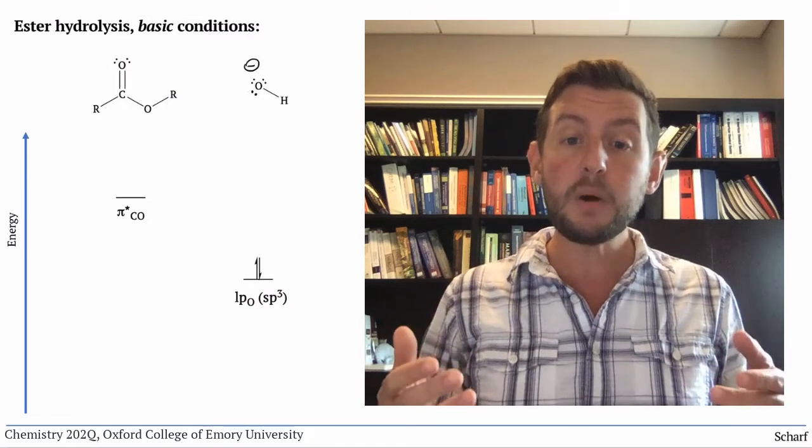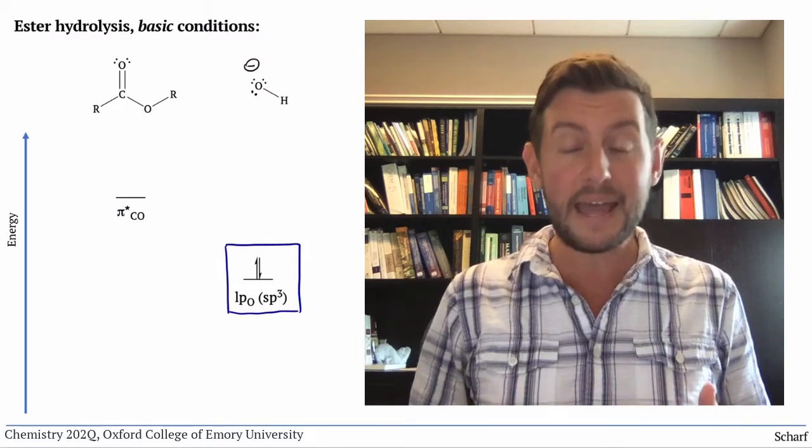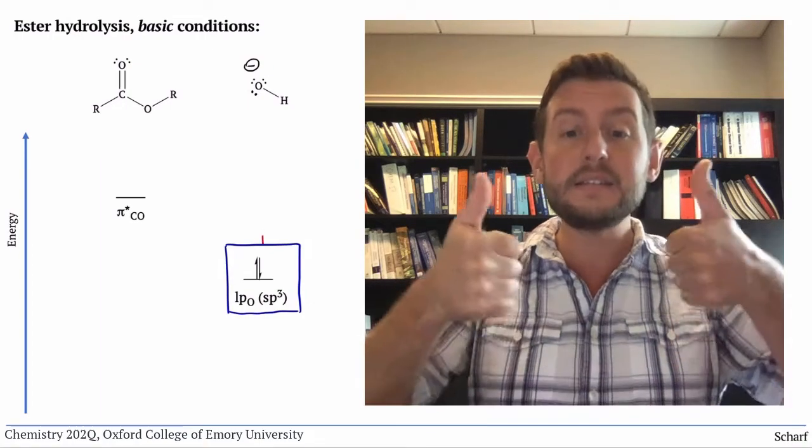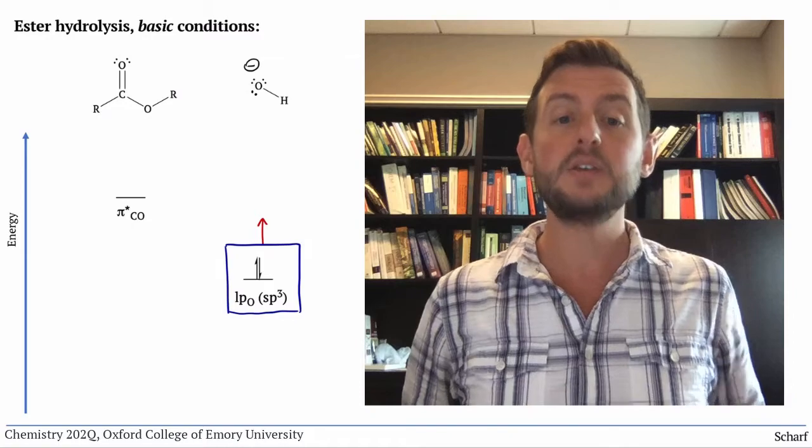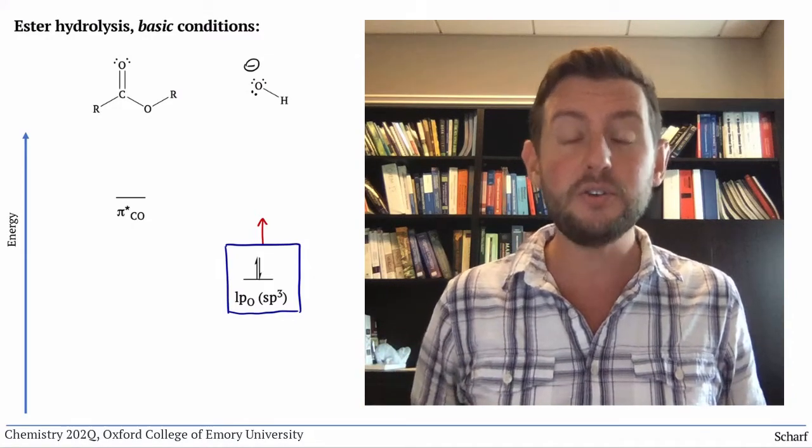The HOMO of OH- is still the sp3 lone pair, but now it has a negative charge. And negative charge raises the energy of orbitals. So now we've got an even higher energy HOMO, and a stronger nucleophile.